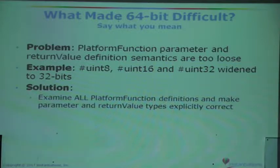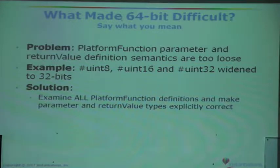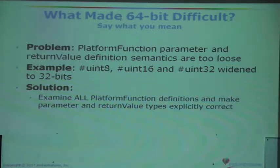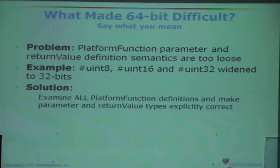The next one is "say what you mean." In VA Smalltalk pre-version-9, foreign function interfaces were rather forgiving about the size that you declared arguments to be. In fact, everything from uint8 to uint32 all expanded to 32 bits when it went through the interface. The new foreign function interface code developed for 64-bit doesn't do that — you have to declare the size of the parameters explicitly. So there was another survey going through the entire product looking for places where we'd been a little loose in declaring the size of parameters.